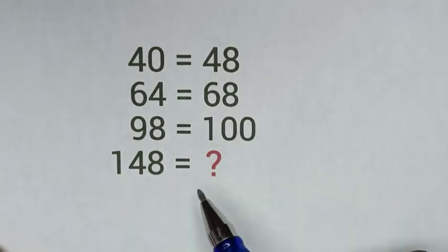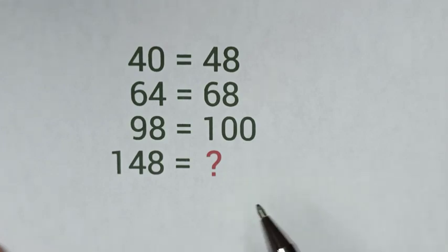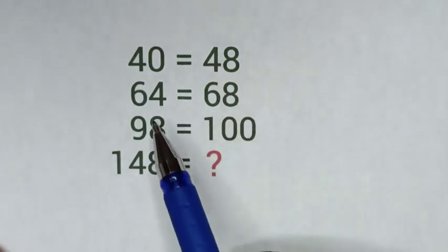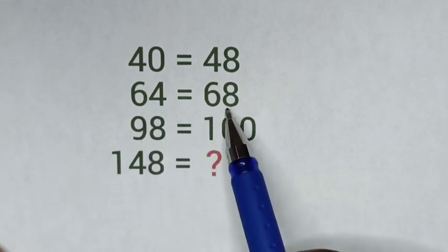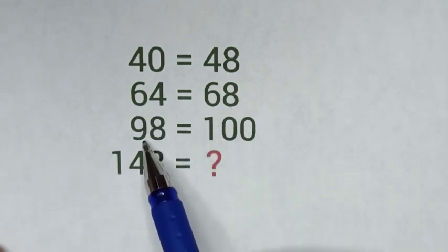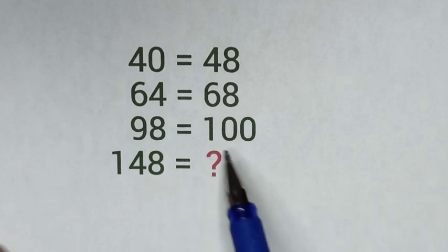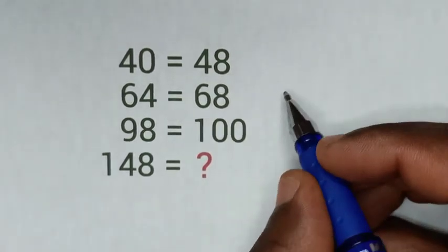Hello, you are welcome. Let's solve this logical reasoning problem: 40 equals 48, 64 equals 68, 98 equals 100, and 148 equals question mark. To find this value, let's analyze the pattern.